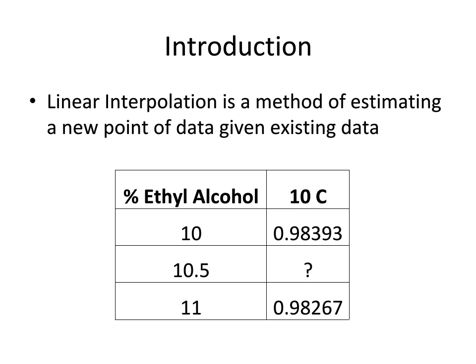So here, I have replicated a table from the chemical processes lab where these are given values of percent ethyl alcohol concentration at 10 degrees Celsius and these are the densities. So the chart gives you 10 and 11, but it doesn't give you 10.5. But assuming that this is a linear relation between these two points, we're able to use linear interpolation to estimate approximately what the density of ethyl alcohol at 10.5 is.